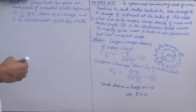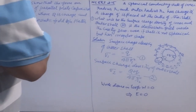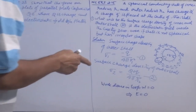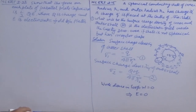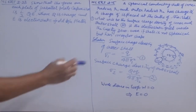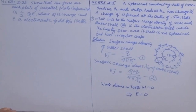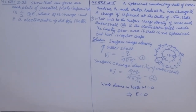Work done equals E·dx. Since dx cannot be zero (we assumed a loop) and cos θ = 1 (loop taken in direction of electric field), E must be zero. Now question 2.28: show that the force on each plate of a parallel plate capacitor is ½QE, where Q is the charge and E is the electrostatic field between the two plates.